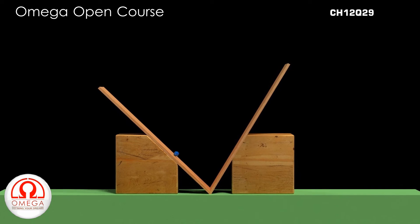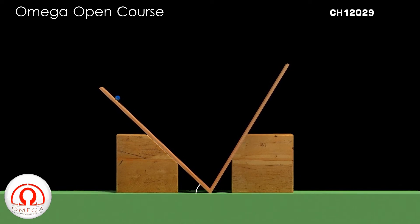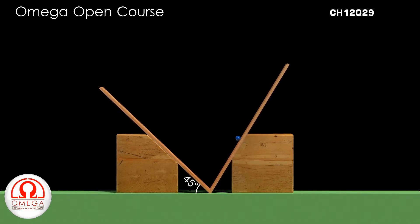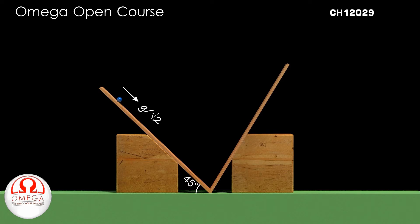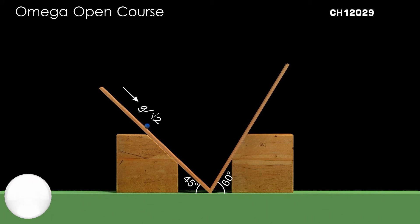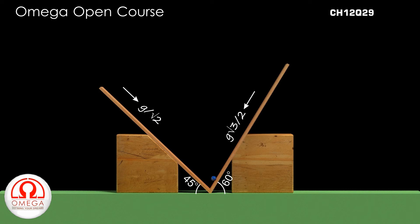Since the inclination of the left segment is 45 degrees, the component of acceleration due to gravity along the incline on the left is g sin 45° or g/√2. Similarly, the inclination of the right segment is 60 degrees, and hence the component of g along the incline is g sin 60° or g√3/2.